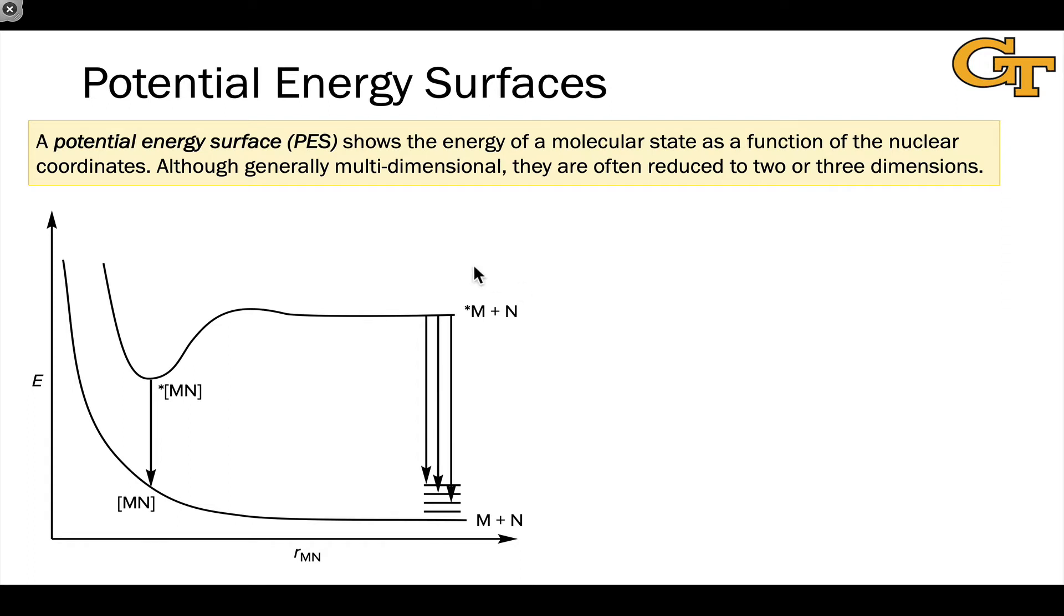We take, for example, a very complicated molecule and reduce it down to a single important coordinate, very often a reaction coordinate associated with a photochemical reaction or a photophysical process.